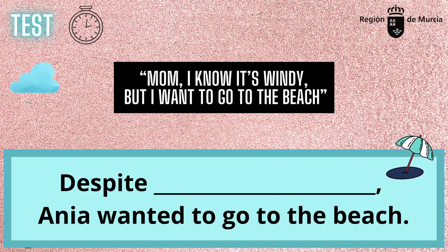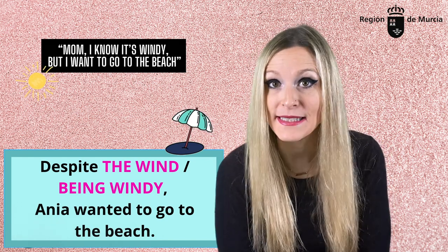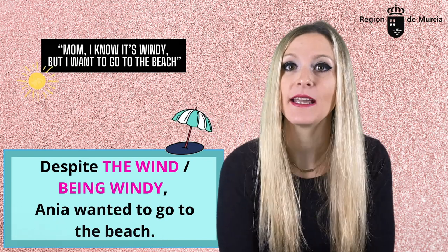Now, let's check what you've learned today. Anya and Ellen will express two contrasting ideas and you've got to decide how to complete the sentences, bearing in mind the different structures that you've learned. First example — Anya says: 'Mom, I know it's windy, but I want to go to the beach.' The answer: despite the wind, or despite it being windy, Anya wanted to go to the beach.